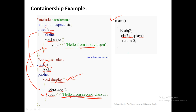Here, some points to remember: we have created the object of only class B, but it executes the function from another class also, because we have created the object of one class into another class. In a general way, we can call it as classes within classes.